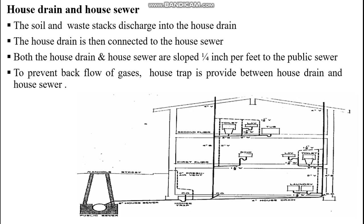House drain and house sewer: the soil and waste stacks discharge into the house drain, which is then connected to the house sewer. Both the house drain and house sewer are sloped one-quarter inch per foot to the public sewer. To prevent backflow of gases, a house trap is provided between the house drain and house sewer.